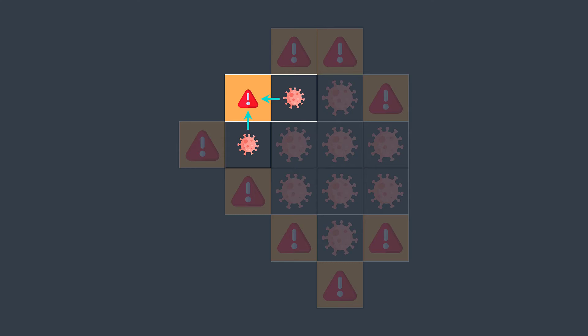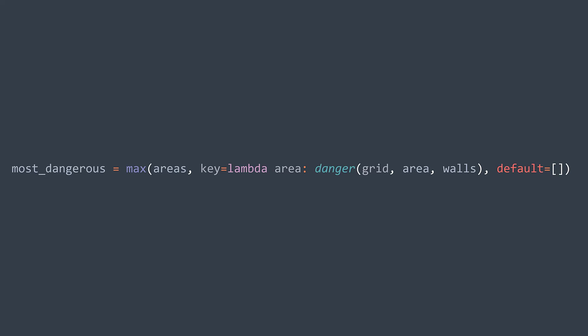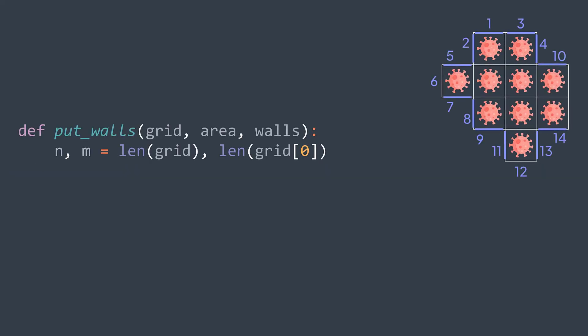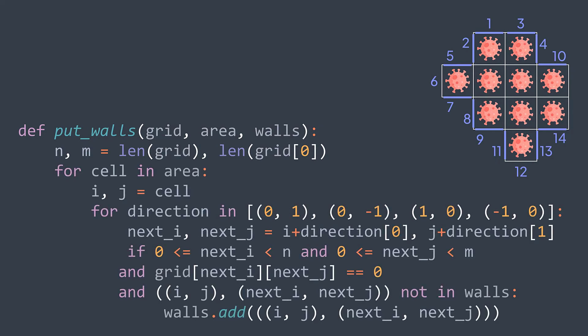To find the most dangerous area, we take the maximum among all areas using the danger function as the key. After finding it, we surround it with walls. We use the same traversal as for calculating danger — when we find an uninfected adjacent cell at coordinates (next_i, next_j), we create a wall between cell (i, j) and (next_i, next_j).